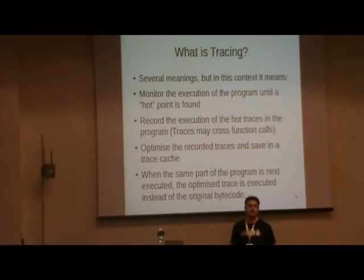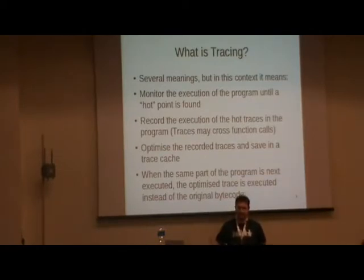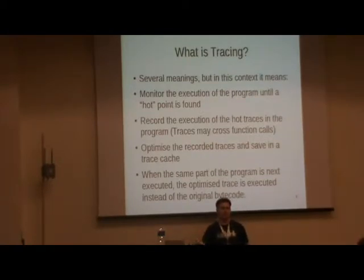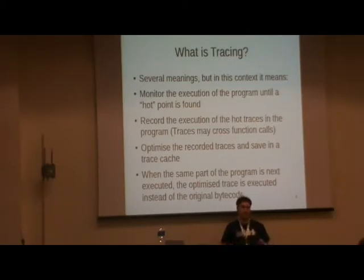What is tracing? All our optimizations are based on tracing, so we need to know what it is. 'Tracing' is a term in computer science with at least 400 meanings, but in this context, tracing is basically following the execution of the program — particularly in a bytecode interpreter, it's following the execution of the bytecodes. In a tracing interpreter, we run through the program, through function calls and returns, and watch certain parts to see if they're repeated often and become 'hot.'